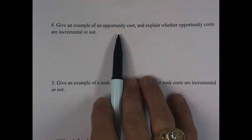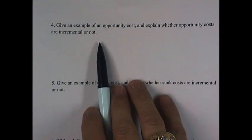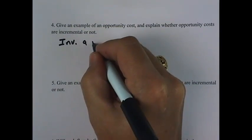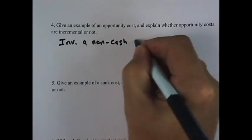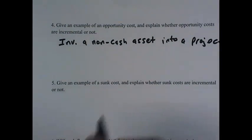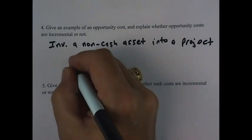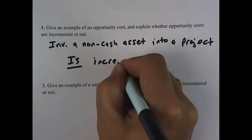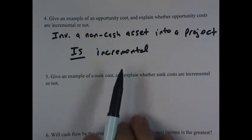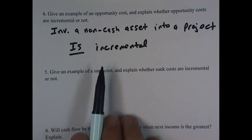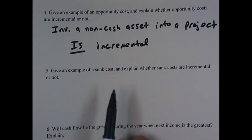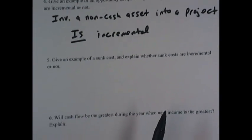Problem four asks us to give an example of an opportunity cost and explain whether opportunity costs are incremental. Our typical example is that we invest a non-cash asset into a project, something that the firm already owns, such as land that we bought some time back. That is incremental because we are giving up the opportunity to sell that land. If we don't accept the project, we could sell that asset. If we do accept the project, we will not sell the asset, so it is causing a change in our cash position, so it is incremental.